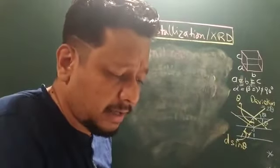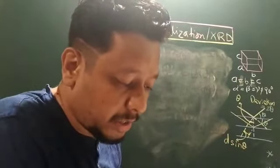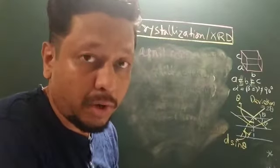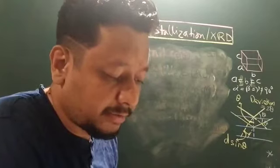Then you have hexagonal: A equals B not equal to C, alpha equals beta equals 90, gamma equals 120 degrees. It is hexagonal, like graphite, zinc oxide, and silver iodide.